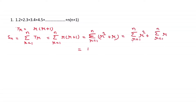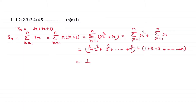The first term expands to 1² + 2² + 3² up to n², and the second term is 1 + 2 + 3 up to n. The formula for the sum of squares of n natural numbers is n(n+1)(2n+1)/6, plus the sum of n natural numbers n(n+1)/2.